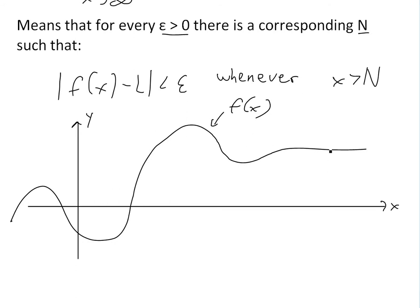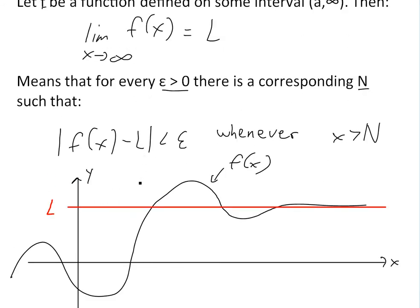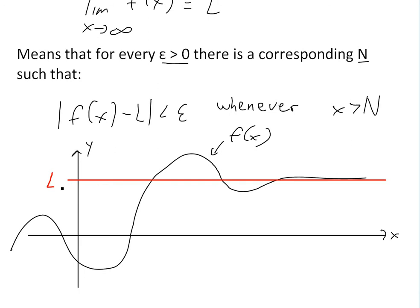As you can see, the function is approaching some limit. To illustrate the definition, basically this function is getting closer and closer as you go to infinity toward this red line here. We'll call this L — so that's the value of the horizontal asymptote.